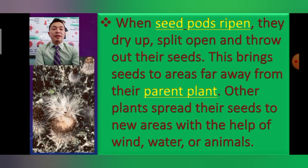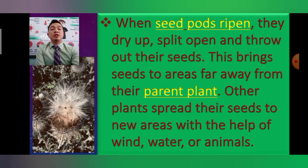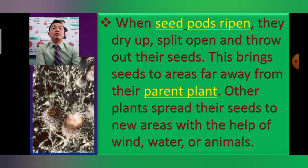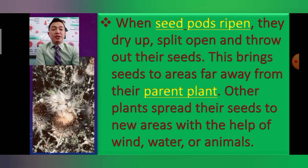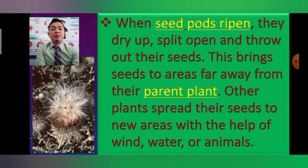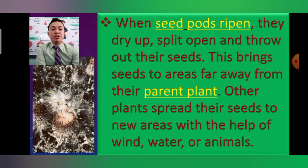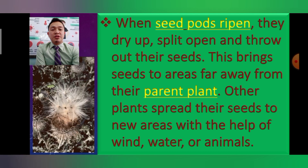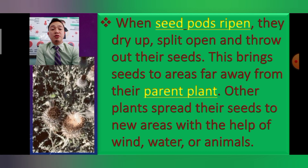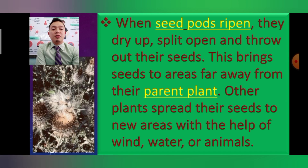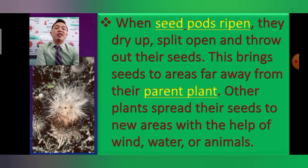When seed pods ripen, they dry up, split open, and throw out their seeds. This brings seeds to areas far away from their parent plant. As you can see, parent plants spread their seeds to new areas with the help of wind, water, or animals. That is important to remember.